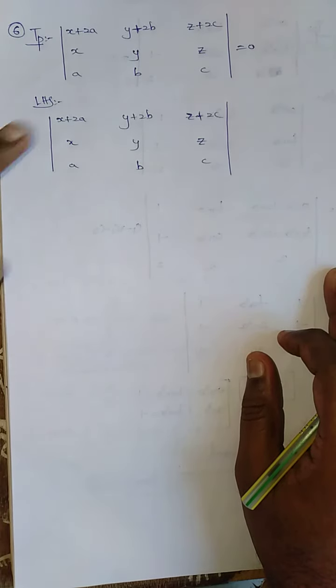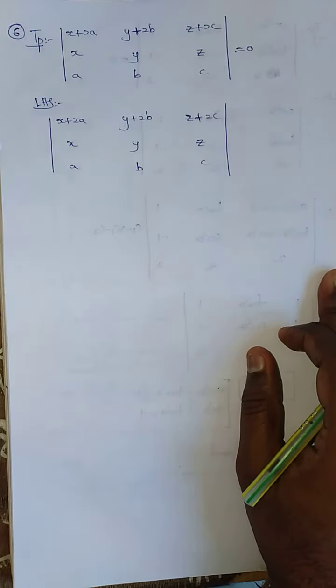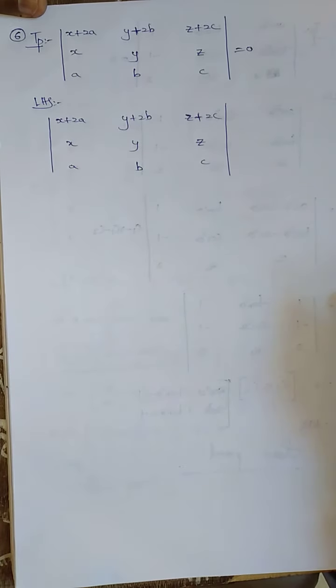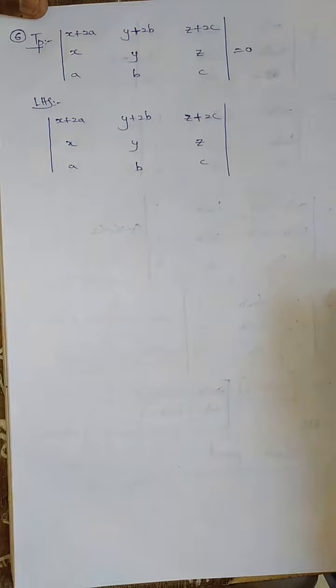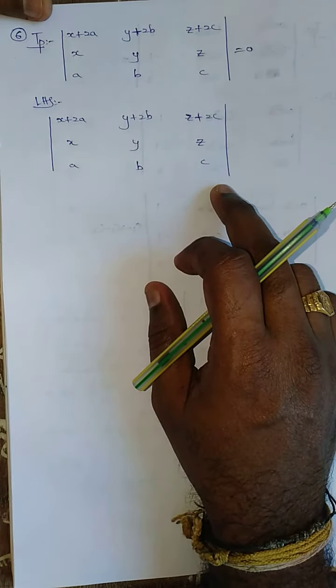To prove this determinant is equal to 0, I have taken LHS. This is only one method. With this method I am going to solve this problem. You can do three types of methods for this sum, but in these three methods I am going to take one simple method.